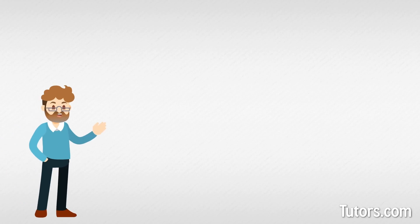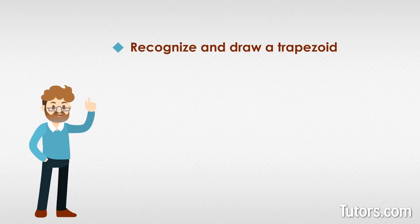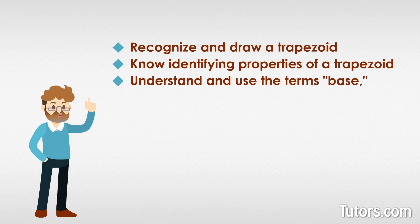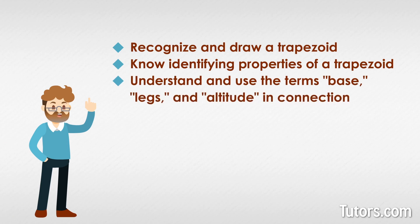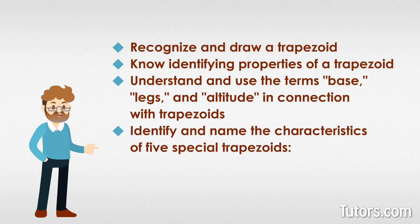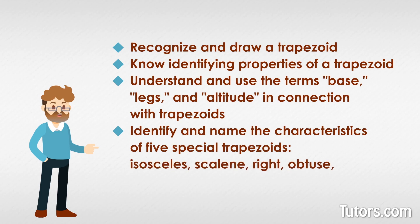Once you view the video and read the information, you will be able to recognize and draw a trapezoid, know identifying properties of a trapezoid, understand and use the terms base, legs, and altitude in connection with trapezoids, and identify and name the characteristics of five special trapezoids: isosceles, scalene, right, obtuse, and acute trapezoids.